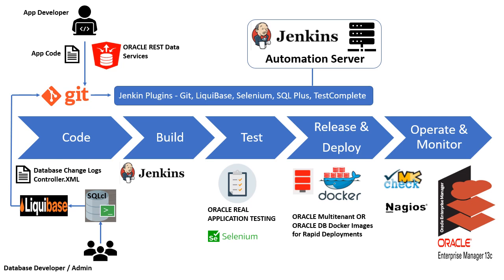I've created a sample pipeline to explain how Oracle technologies and options could be used in various phases to complement your existing DevOps pipeline. In this pipeline, I have used Jenkins Automation Server as a core automation engine, which overlaps between various phases of the CICD pipeline and integrates these phases using different plugins.